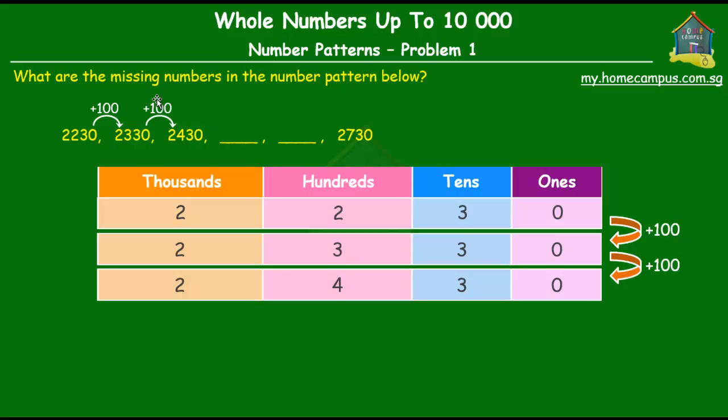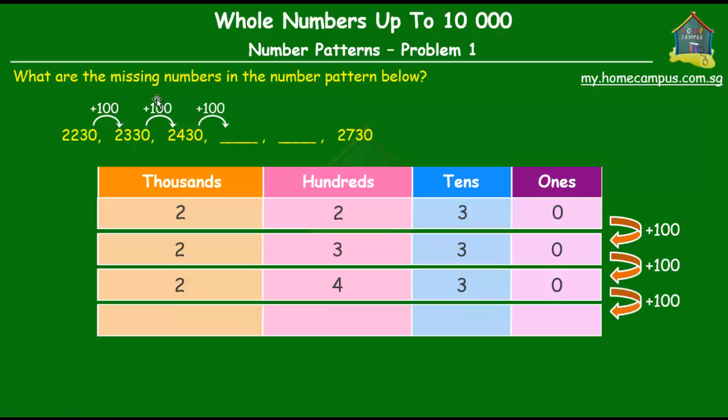So from 2430, how do we get the first missing number? Well, we simply add 100 to it. So no difference in the ones and the tens, then the hundreds becomes five. So we add one to four and we get five and again, no difference in the thousands. So there you go, you get 2530 as the first missing number.